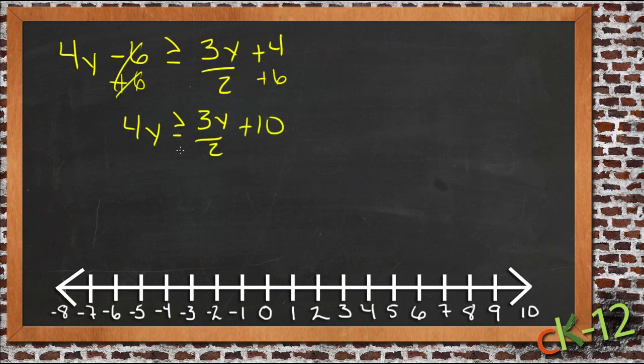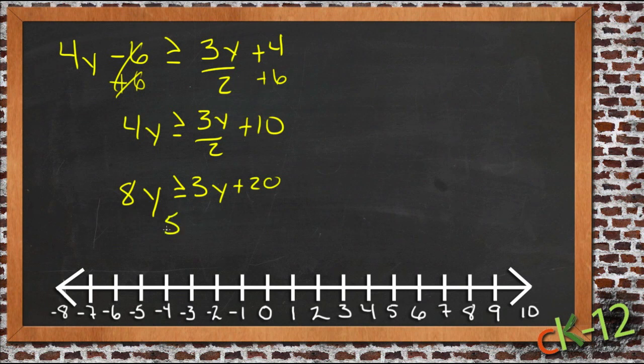Let's go ahead and multiply everything by 2 to get the 2 out of the denominator. So we'll have 8y is greater than or equal to 3y plus 20. Then I can subtract 3y from both sides and I get 5y is greater than or equal to 20. And divide both sides by 5 gives me y is greater than or equal to 4.